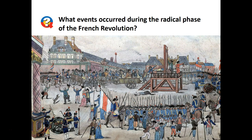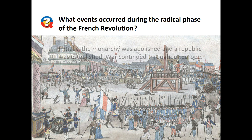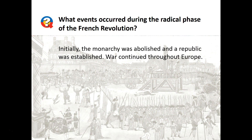Our focus question: What events occurred during the radical phase of the French Revolution? There's a lot to keep track of here, so we'll take it step by step. Initially in this period, the monarchy was abolished, and many groups were seeking to establish a republic. Outside of France, the war continued — basically France against most of the monarchies of Europe.